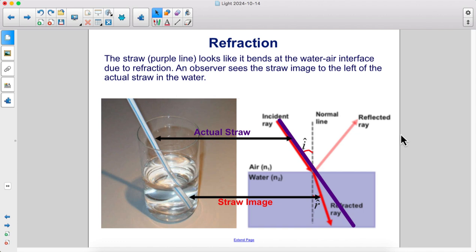The straw looks like it bends at the water-air interface due to refraction. An observer sees the straw image to the left of the actual straw in the water.